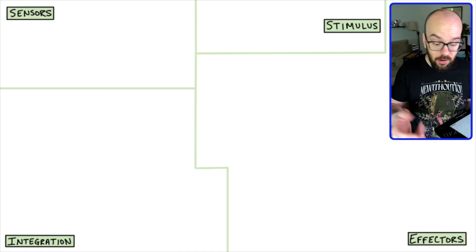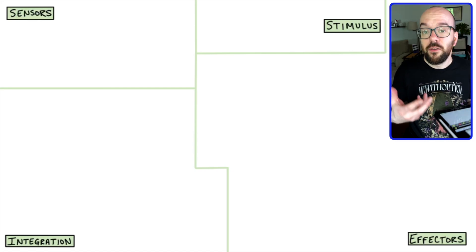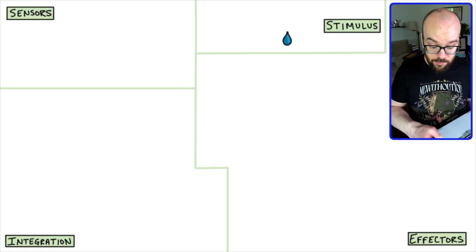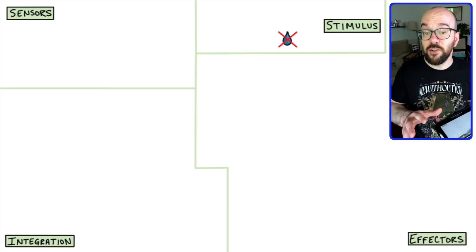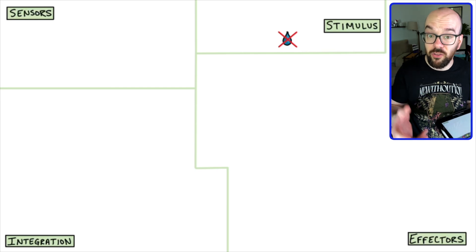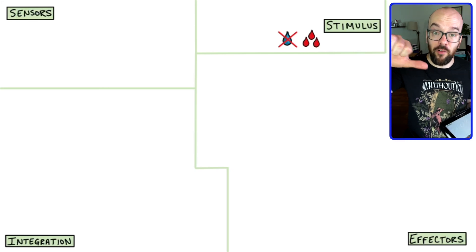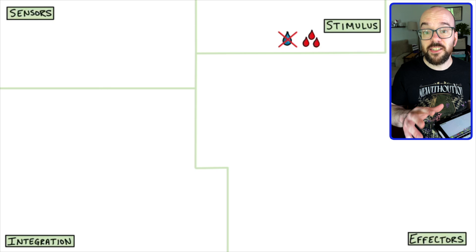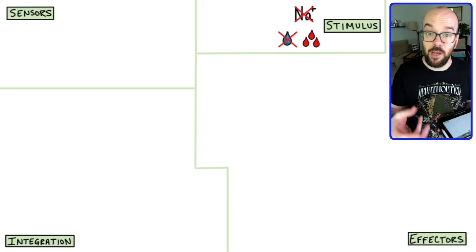So what are the stimuli that could initiate this RAA system? This is all about regulating blood pressure and blood volume. Whenever our water levels in the body drop, such as when we're dehydrated, that's going to be one of the stimuli that kicks the system into place. Another stimulus is blood loss — if some blood is leaving the body, our blood volume is decreasing. This system is also going to help regulate sodium levels, so whenever we have a sodium deficiency, that's going to stimulate the system to become more active as well.